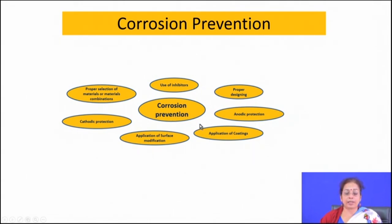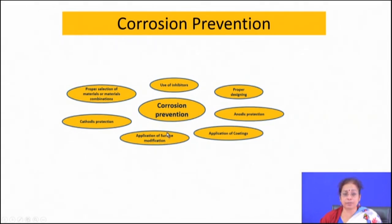If you talk about high temperature oxidation-based corrosion, it can be avoided or minimized by proper choice of material in that specific environment, by surface alloying, and by application of coating. Liquid metal corrosion can be avoided by proper selection of material combinations and by application of coating.